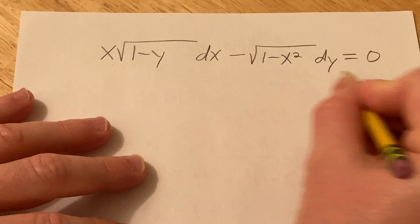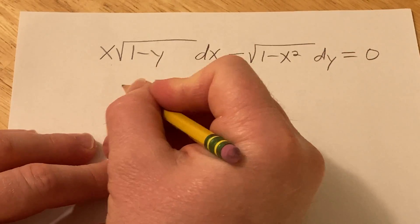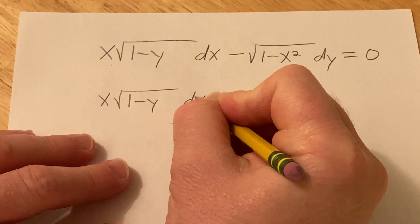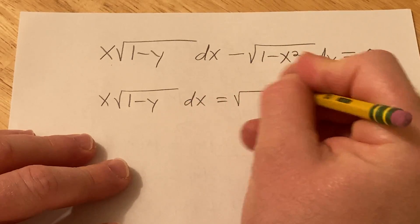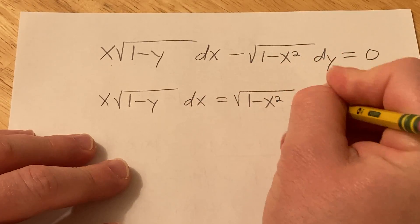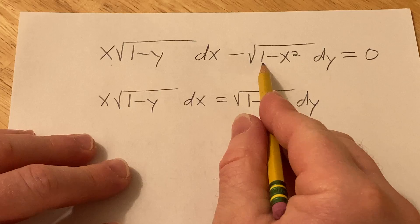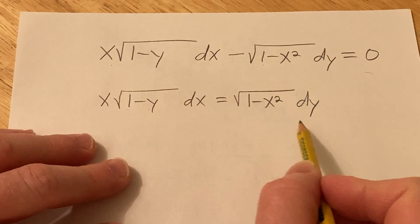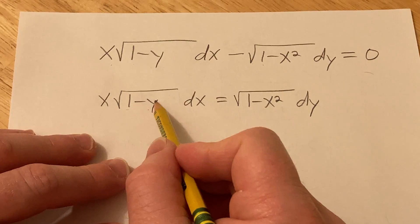So we'll start by adding this to both sides. So we have x square root 1 minus y dx equals square root 1 minus x squared dy. Just taking this and adding it to the other side. And this square root 1 minus y needs to be over here, so I'm going to divide by this.